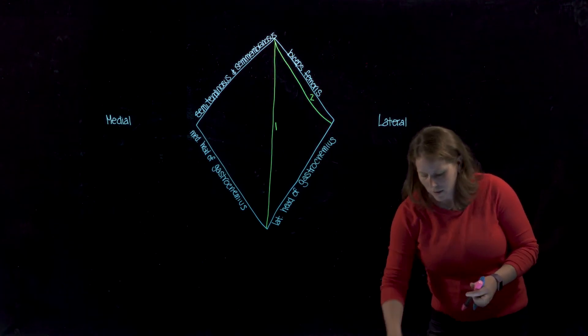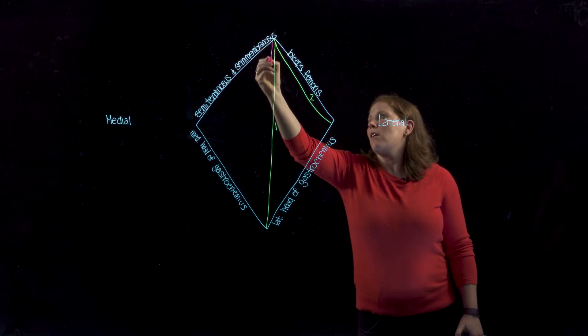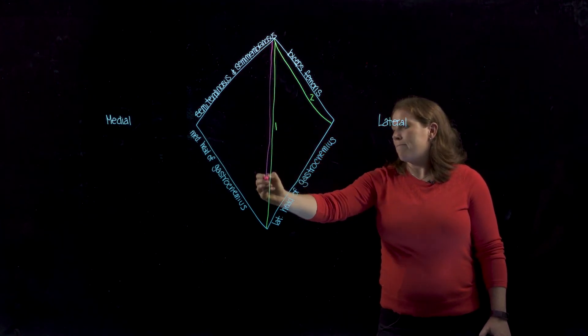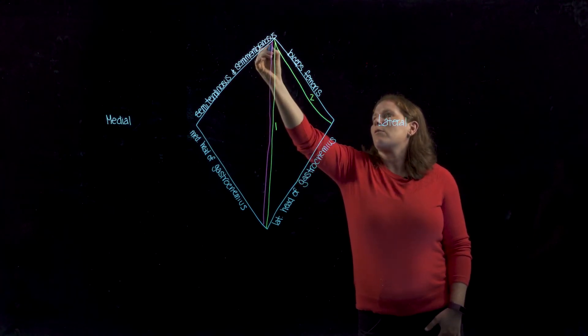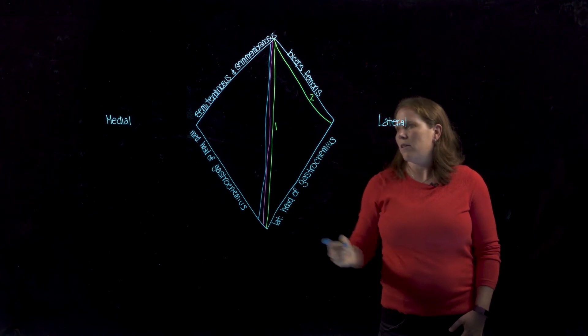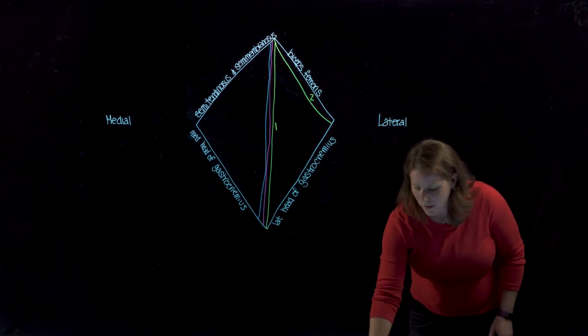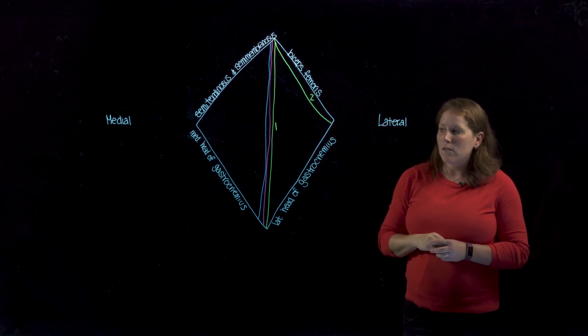Also in this popliteal fossa you will find the popliteal artery and very closely the popliteal vein. Now those popliteal vessels are a continuation of femoral vessels.